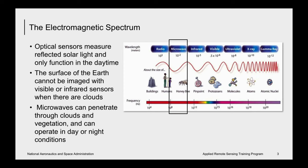Remote sensors are designed to operate at specific regions of the electromagnetic spectrum according to their intended application. Microwave sensors operate within a much lower frequency range than optical and infrared sensors. To put things in context, the wavelength of light is about 300 to 700 nanometers, while for microwaves it is on the order of 0.3 to 40 centimeters. Because of this huge disparity in wavelengths, features on the Earth's surface appear differently in the microwave range than in the optical range.